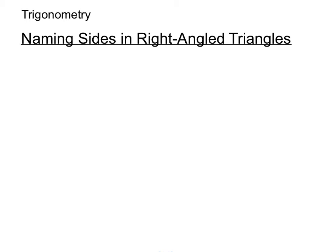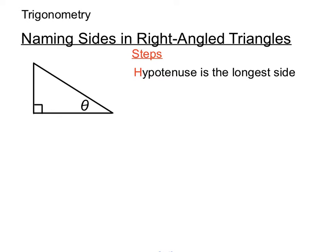When we name the sides in right angle triangles, there's a particular order that makes it helpful for us. The steps are, well, the hypotenuse. We'll name the hypotenuse first because it's always the longest side of any right angle triangle. So we'll look for the longest side and call it the hypotenuse and put an H there.